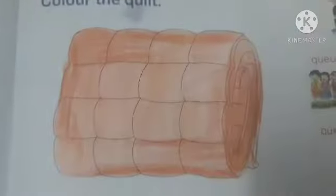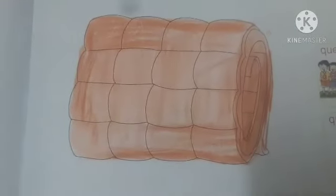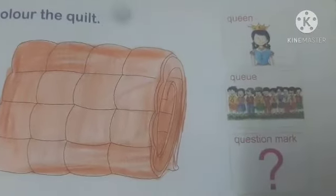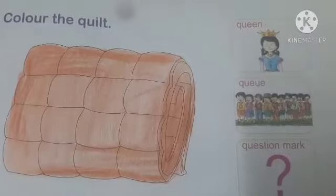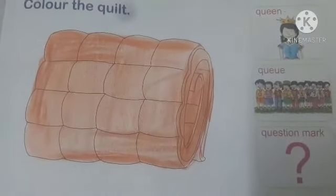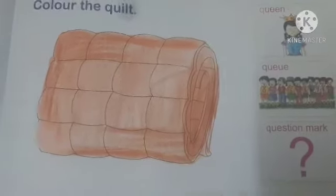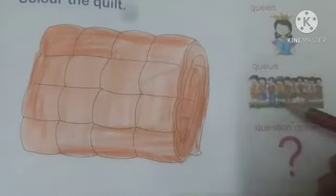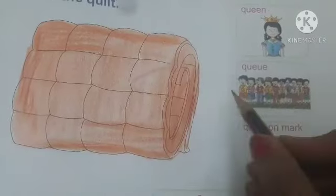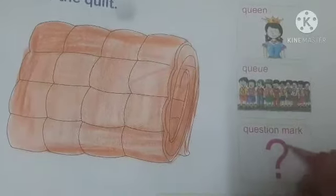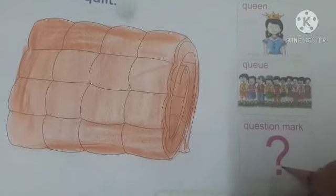We have colored the quilt. Now see another picture related to letter Q. What you see here? Quilt, queen, and a caution mark. Here you see a queen, and here you see children — they are sitting in a queue. And what is this? A caution mark.